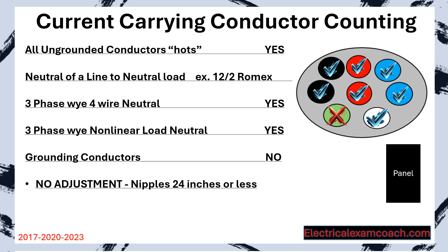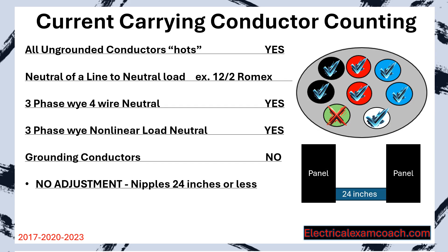No adjustment will be made for nipples that are 24 inches or less. Let's imagine we have a panel on each side and we want to run a short nipple that's 24 inches or less — this does not count in our bundling adjustment, which is a thing of beauty, because otherwise you'd have to de-rate all conductors jumping just 12-gauge circuits from a house panel over to a generator.